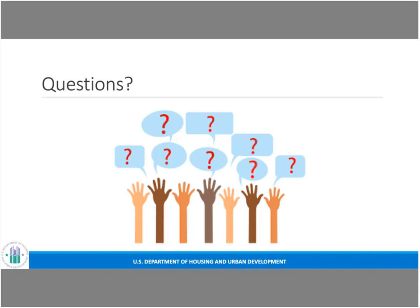Another question: In the closeout blend, if a PHA has 70 units and is taking 50 through Section 18 and 20 through RAD, does the PHA have discretion to choose which units go through Section 18 and which through RAD? For example, could they take three- and four-bedroom units through Section 18 and two-bedroom units through RAD? Yes, it's up to the PHA to determine which units go under which approach.